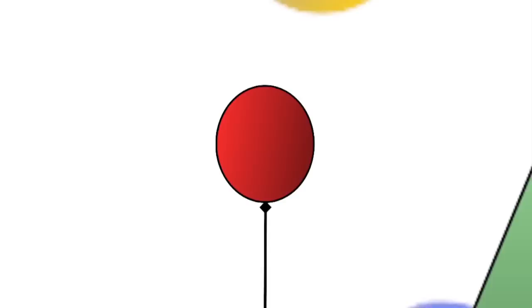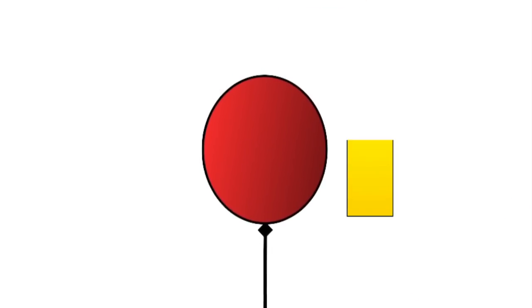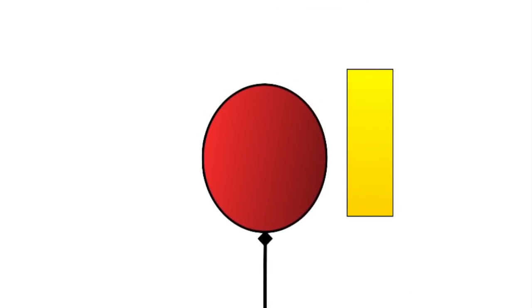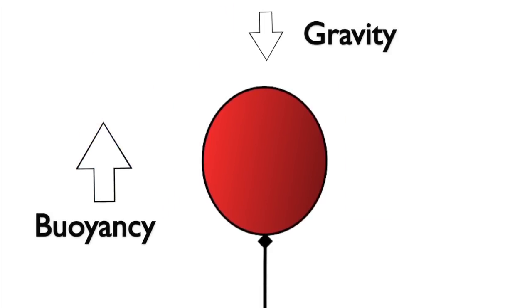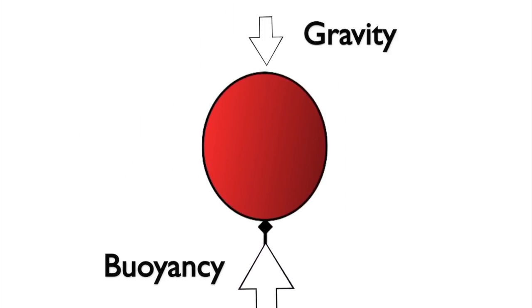But what about along the length of a balloon? Sense it or not, the difference is there. The slight minuscule change in pressure from below the balloon to above it is enough to overcome the downward force of gravity, cause a net upward push on the balloon, and voila! We have found our missing force.